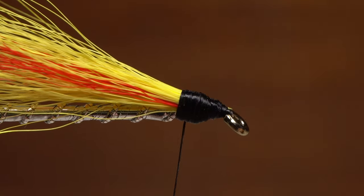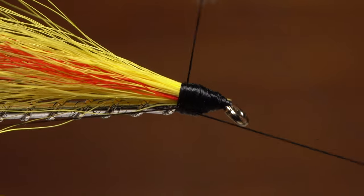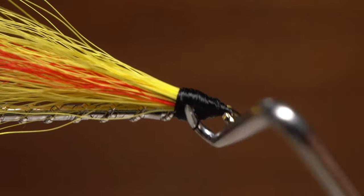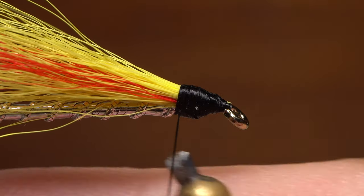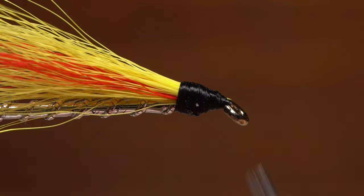When you're happy with the look, pick up your whip finish tool and do a five or six turn back to front whip finish, seat the knot well, and snip or cut your tying thread free.